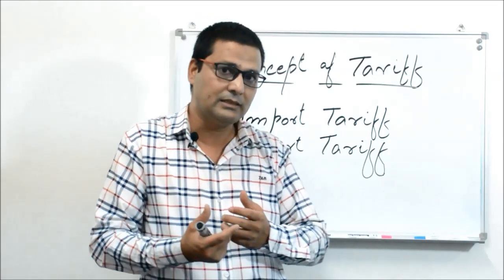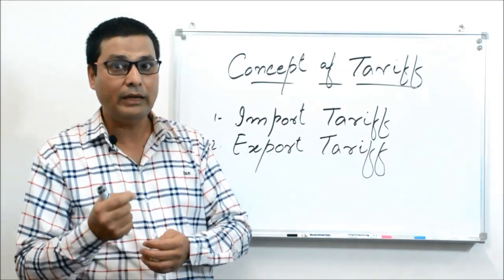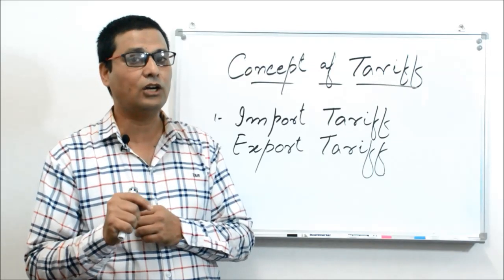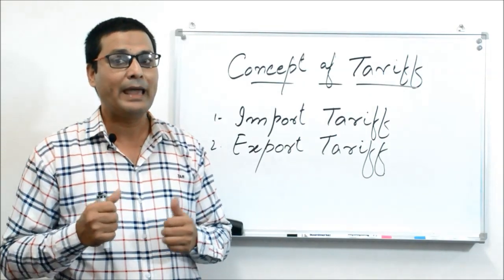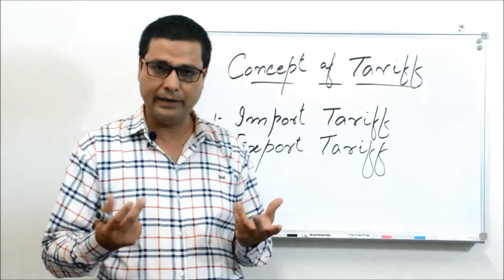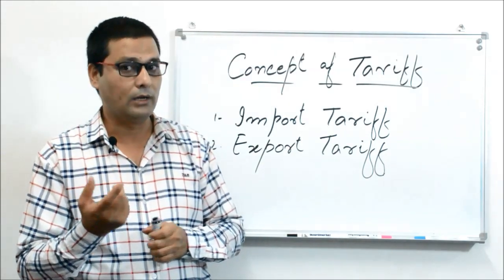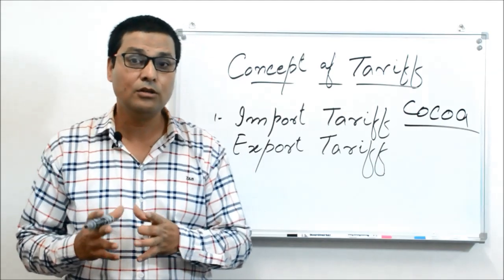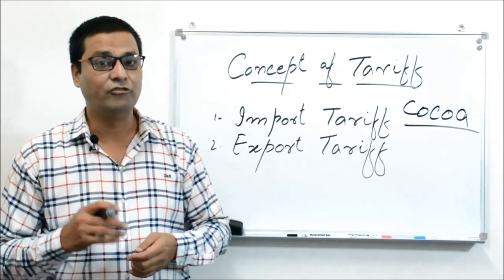By imposing a tax on exports, a country can affect the world price if it is a large enough dealer. Export tariffs are also used by some developing nations. Here, 'large or small' refers not to physical size but to the ability to influence world prices. For example, Ghana is a very small country but is the world's top exporter of cocoa, so the government of Ghana levies a tax on cocoa exports to affect the world price.